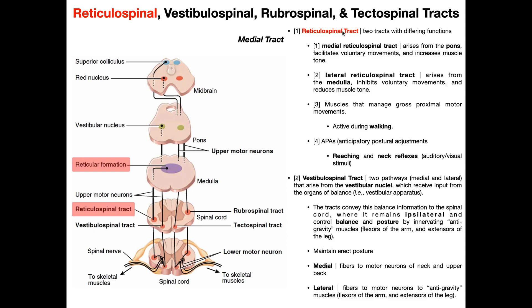The first one we'll talk about is the reticulospinal tract. This is two separate tracts with opposing functions — the medial and lateral. The origin of both tracts is the reticular formation. Remember when naming these tracts, the initial part, the prefix so to speak, is where it comes from (the origin), and the last part of the name is the destination. So this tells you it goes from the reticular formation to the spinal cord.